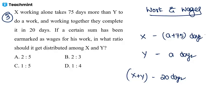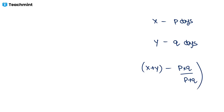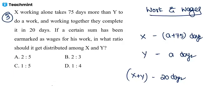There is a shortcut: if two people alone take P days and Q days respectively, then together they take P×Q / (P+Q) days — that is, product divided by summation. So here, (a+75) × a / (2a+75) must equal 20.